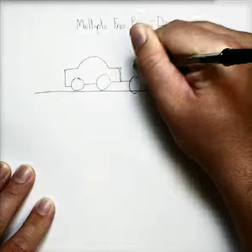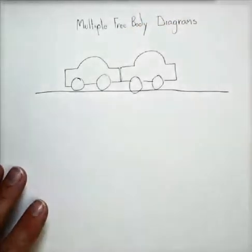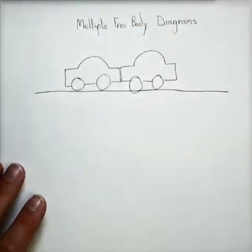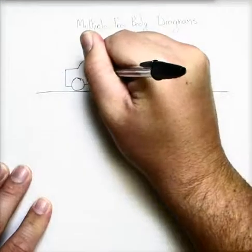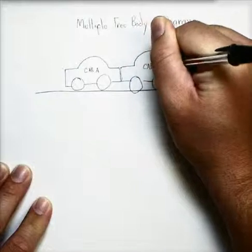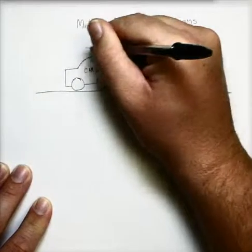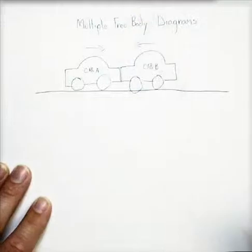Now notice in this situation we have two cars, and because there's only one way I draw a car, they look kind of identical. So let's go ahead and identify them as car A and car B. Just for the sake of clarity, car A was moving that way, car B was moving that way.